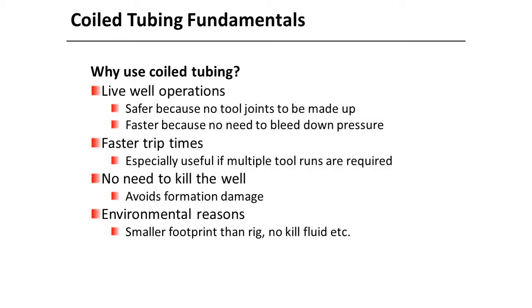So why do we need to use coiled tubing? We need to use coiled tubing if we want to achieve the following. Firstly, due to the needs for live well operations, which will be safer because no tool joints need to be made up, and faster because there is no need to bleed down pressure.